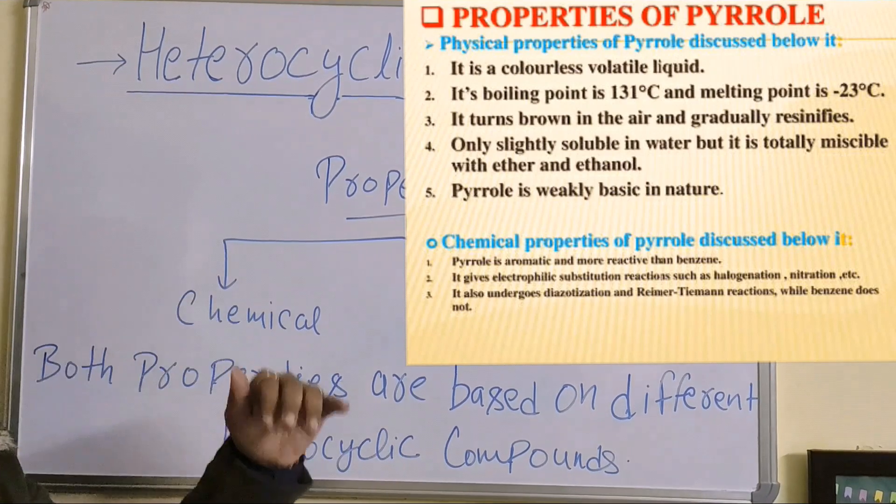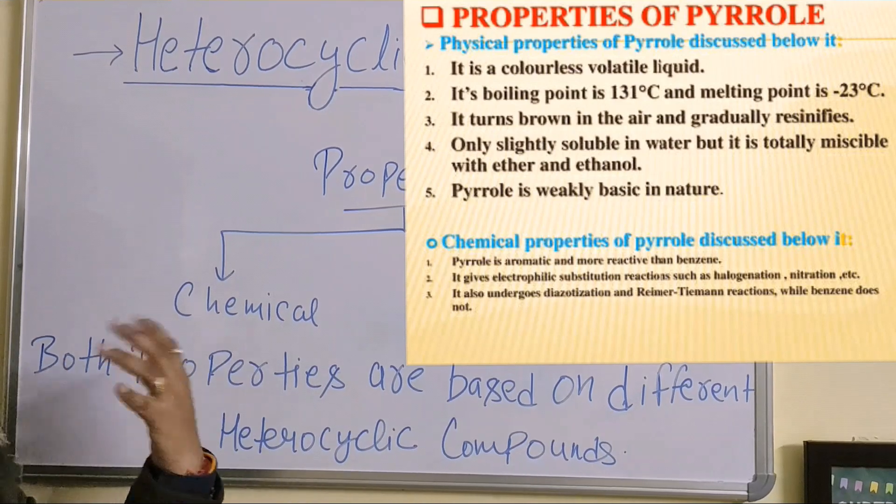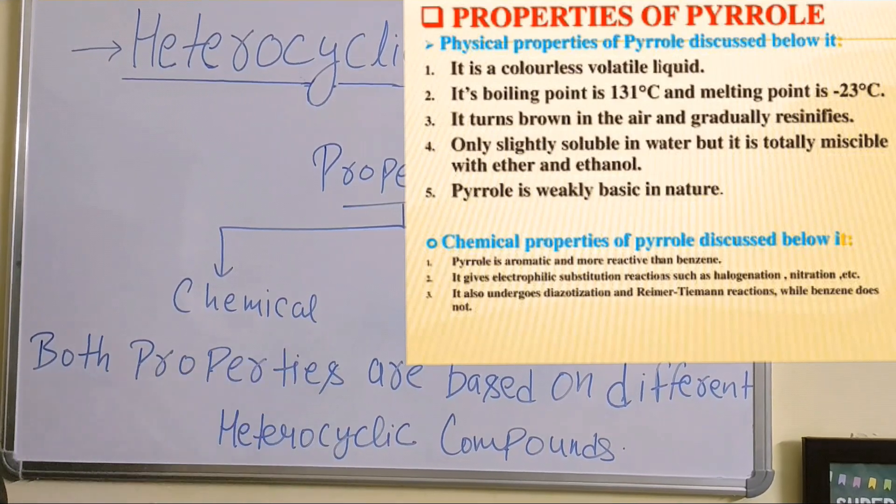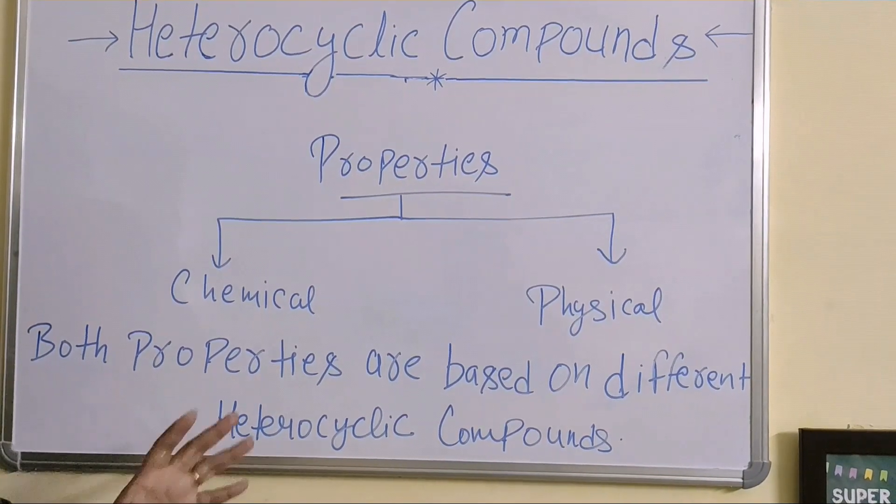So, when we talk about particular ring, then we talk about physical and chemical properties. For example, there are different compounds of different chemical properties.